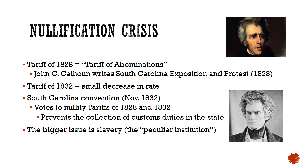As John Green talks about in the video, the South Carolinians and in fact other southerners are very upset about the Tariff of 1828. They called it the Tariff of Abominations. This was a really high tariff that hit them pretty hard because southerners, being an agricultural society, didn't have a lot of manufacturing, so they had to import manufactured goods. A high tariff means they pay more for these goods.